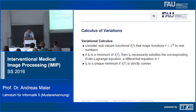We will use the Euler-Lagrange equations to find minima of a functional with respect to a specific function. If f_0 is a unique minimum, then the functional is strictly convex — a very similar observation to what we know from standard optimization.